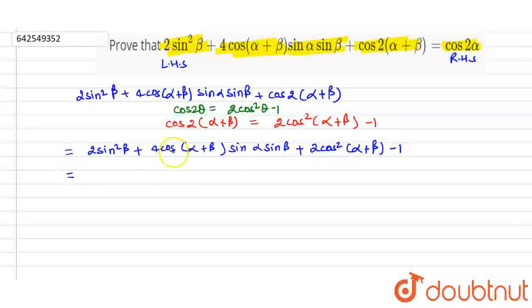Let's bring the -1 to this side: 2sin²β - 1 + 2cos(α+β)[2sinαsinβ + cos(α+β)].